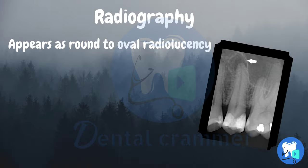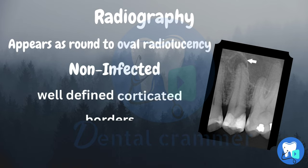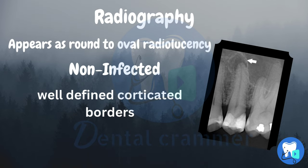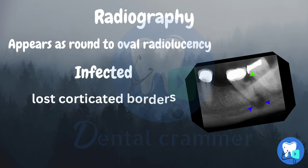In radiography, it appears as round to oval radiolucency at the apex of the tooth. In case of non-infected cysts, it will have well-defined corticated borders, and if infected, the corticated borders will be lost.